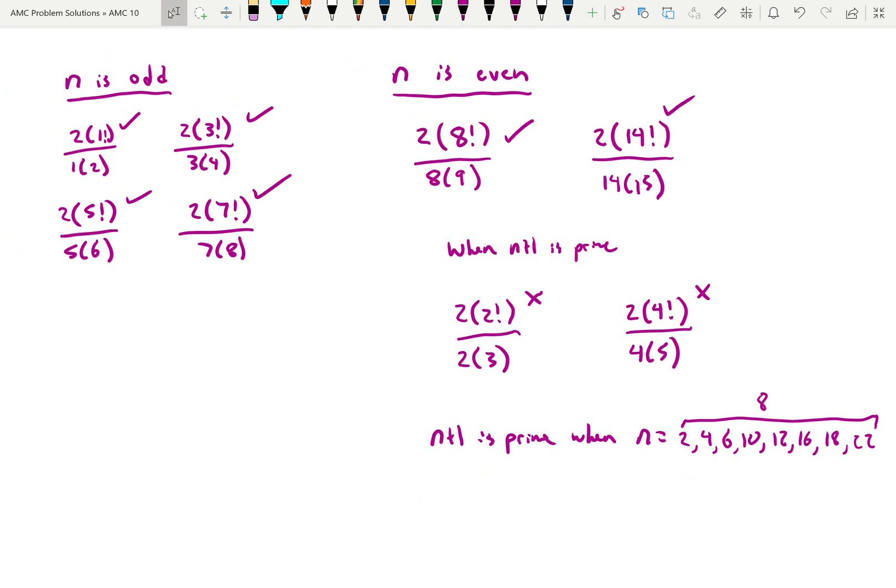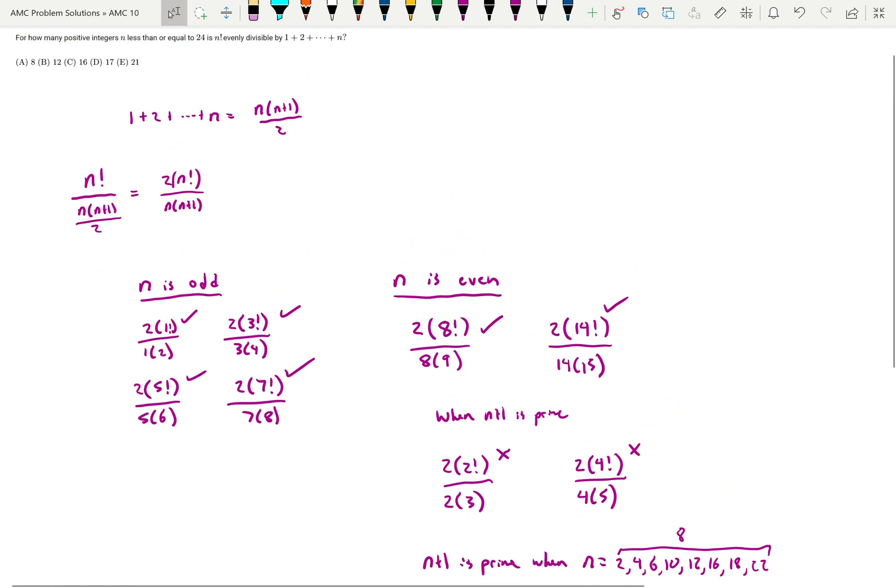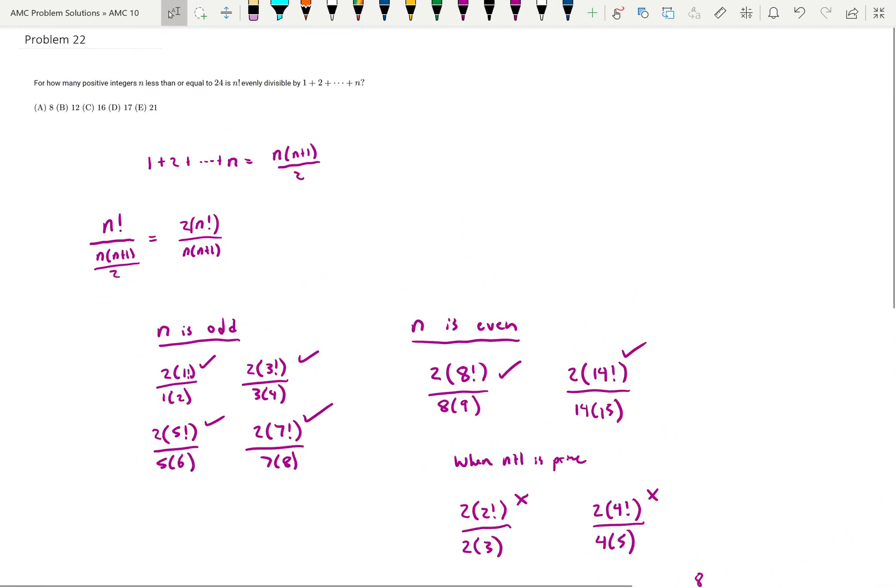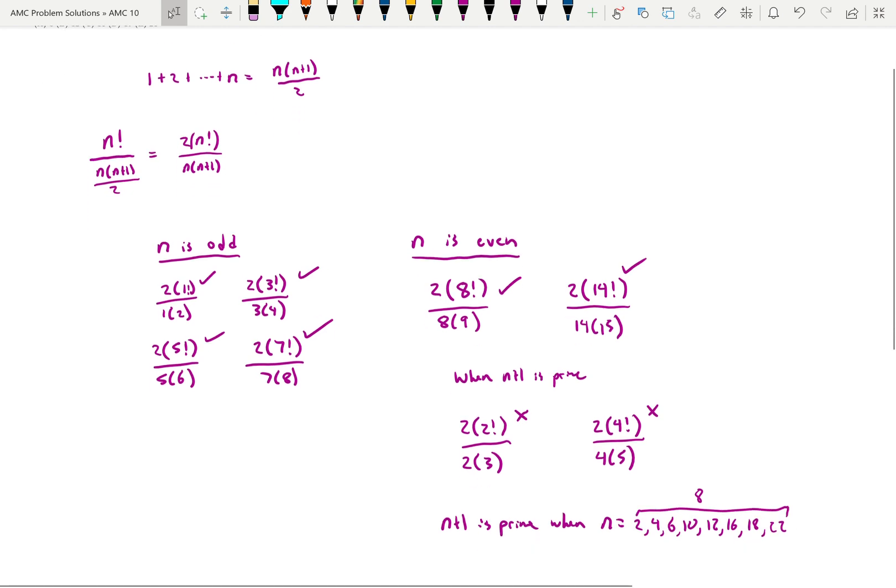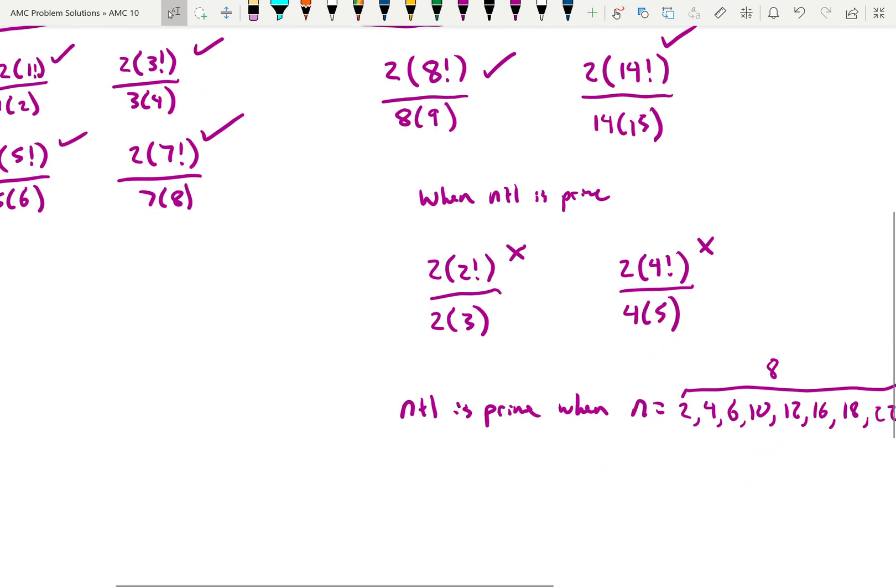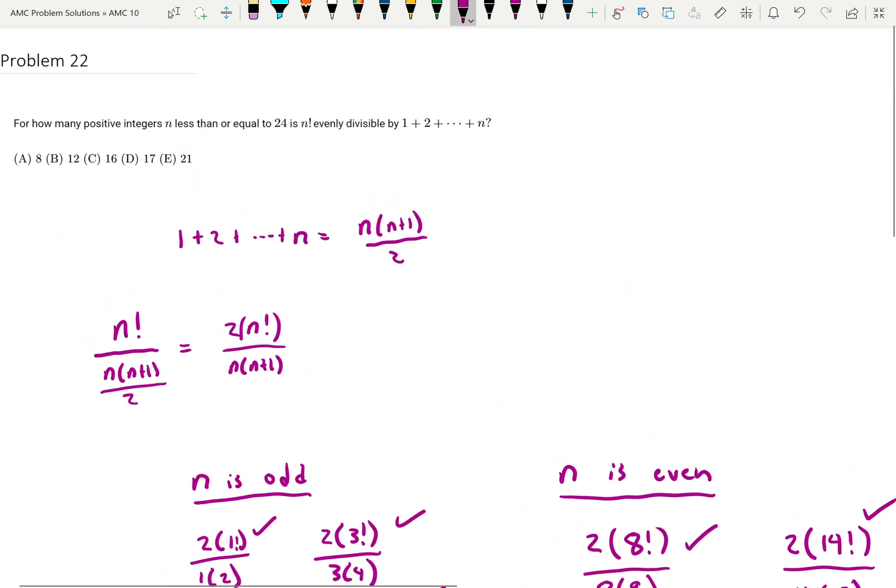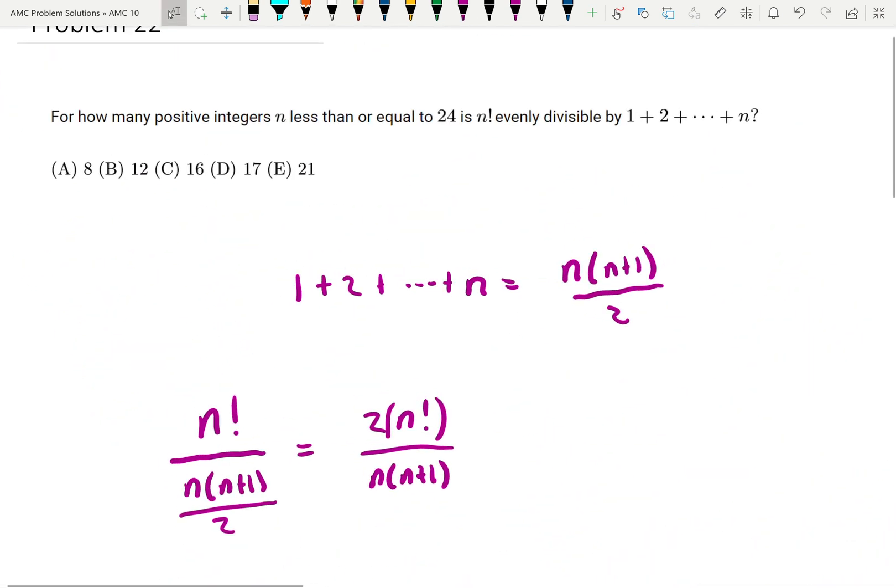So for 8 values of n, it won't work, since we have up to 24, it said. So positive integers less than or equal to 24. We're dealing with 24. So 24 minus those 8 that won't work gives us 16 that will work. And that is our answer. So the answer is choice C.